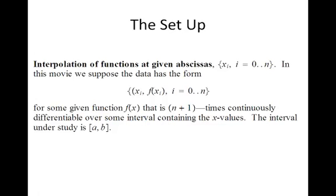So here's the setup. We're going to interpolate a function at given abscissas, those are the x's, x sub i, i equals 0 to n. It's very convenient to start at 0 for the first index.